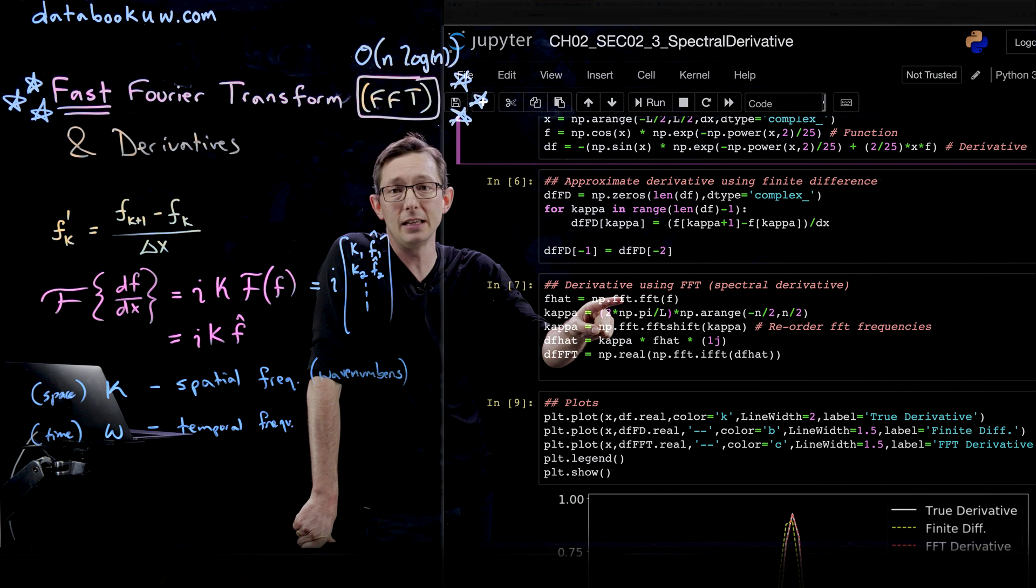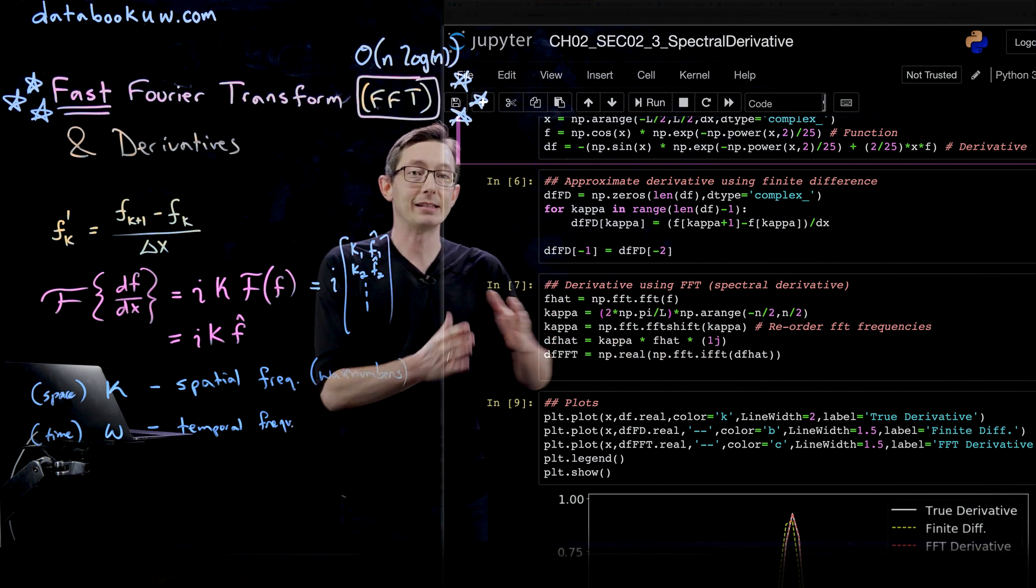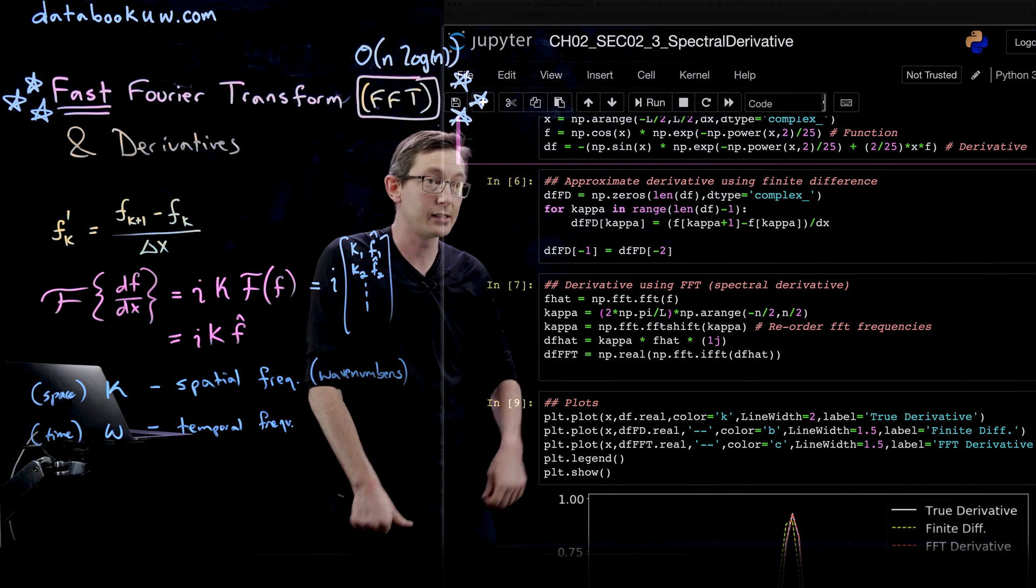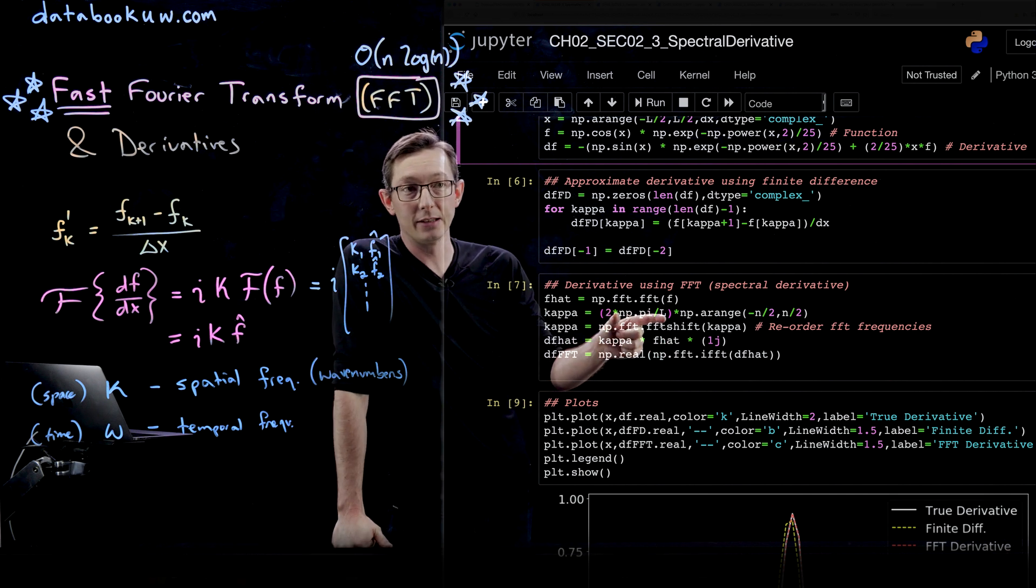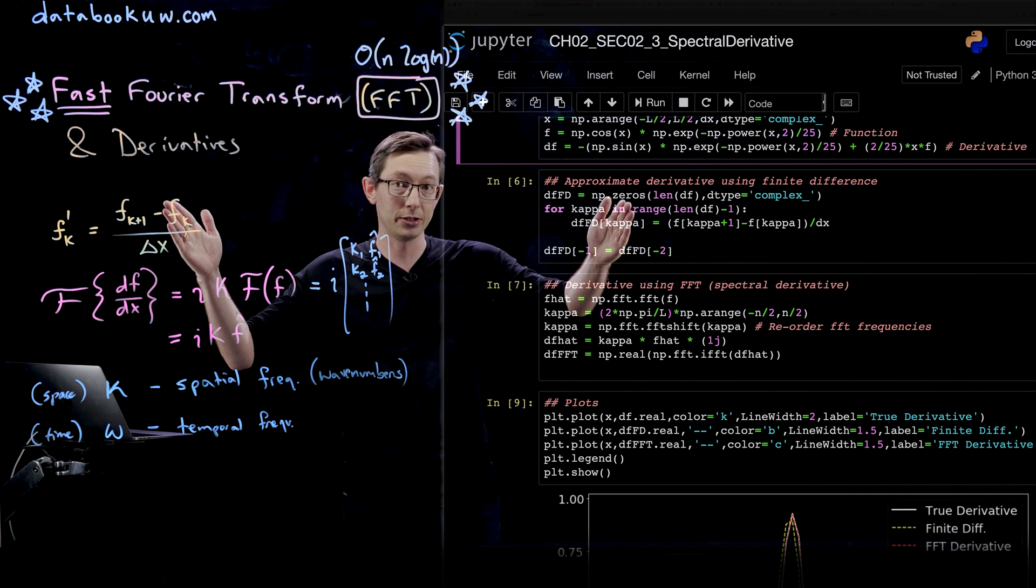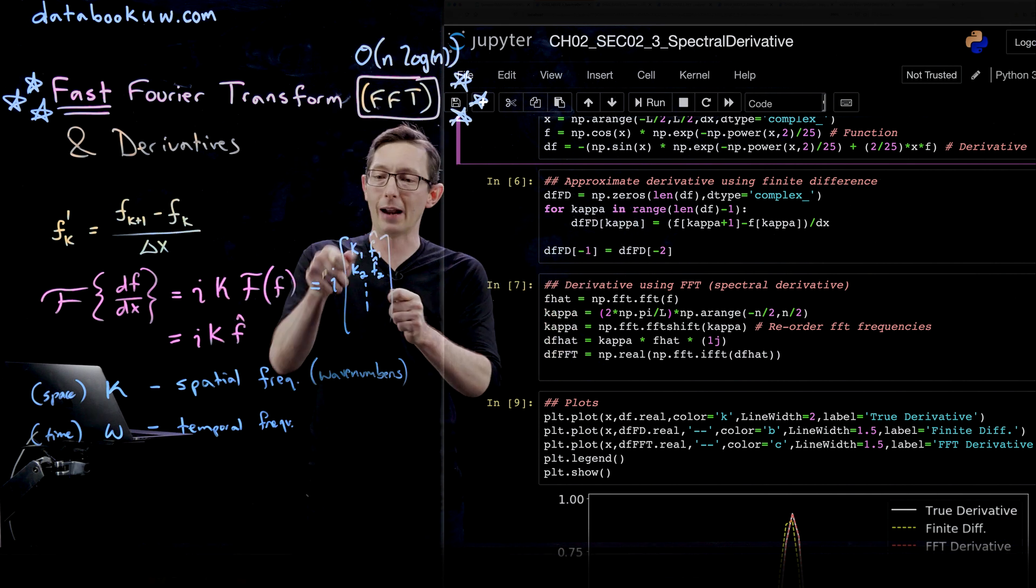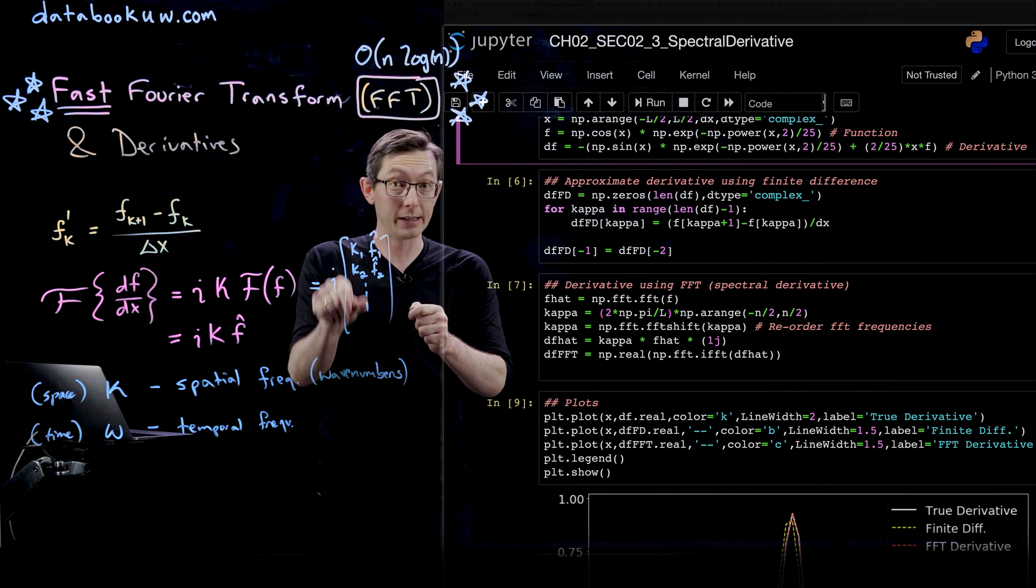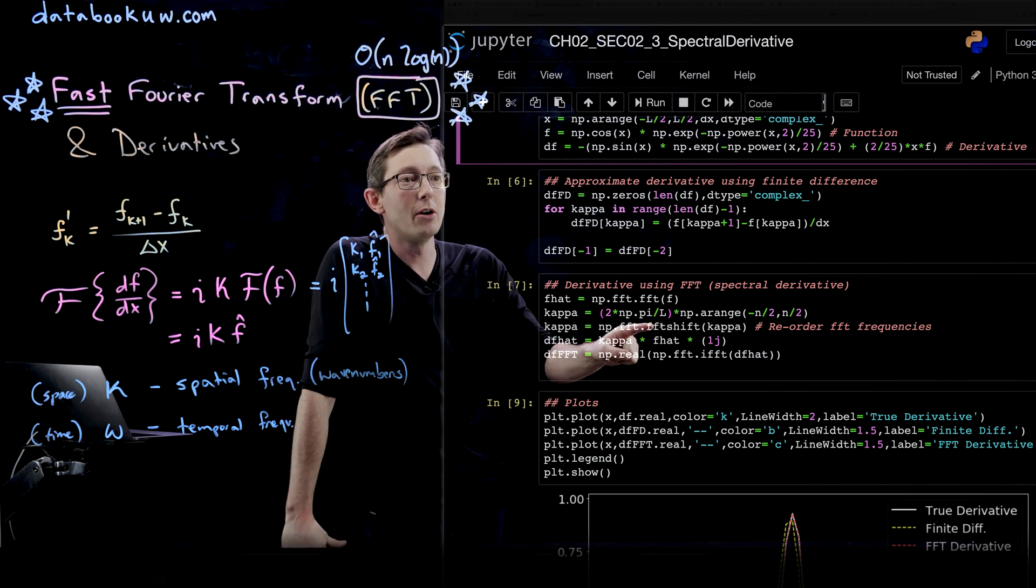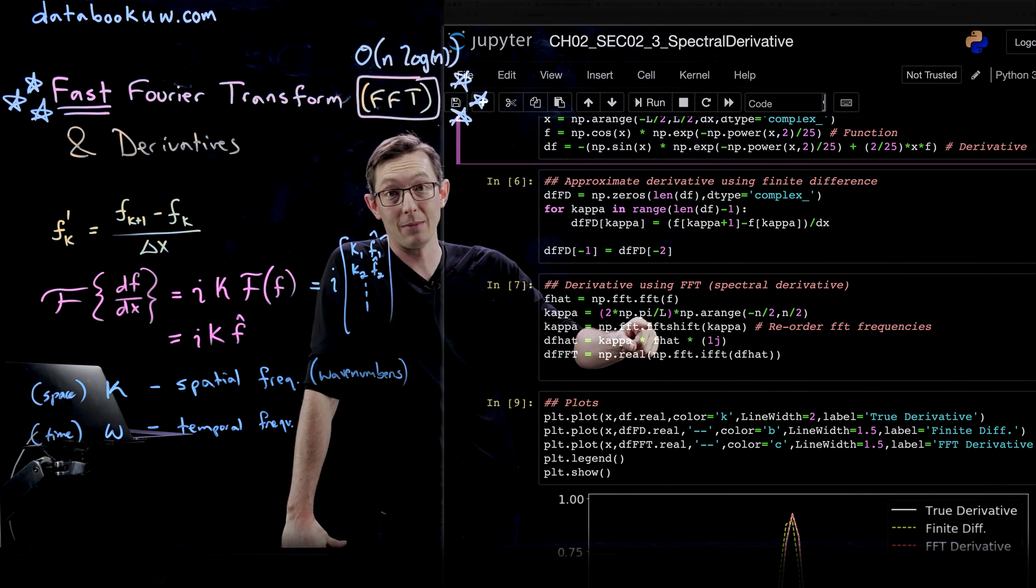I take the fft and put it in f hat. I create this kappa vector, which is a big vector of frequencies. I take my fundamental frequency unit, 2 pi over L, and multiply it by this vector from minus n over 2 to n over 2. In most languages, you have to be careful about how you order and organize those frequencies into that kappa vector. In most languages like MATLAB and Python, there's this fft shift command.